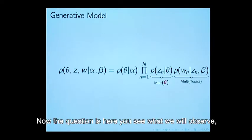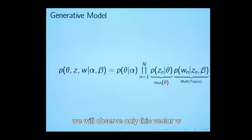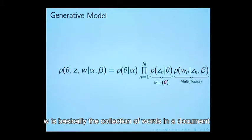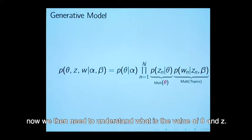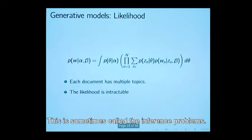The question is here, you see what we will observe. We will observe only w, this vector w. W is basically the collection of words in a document. We then need to understand what is the value of theta and z. This is sometimes called the inference problem.